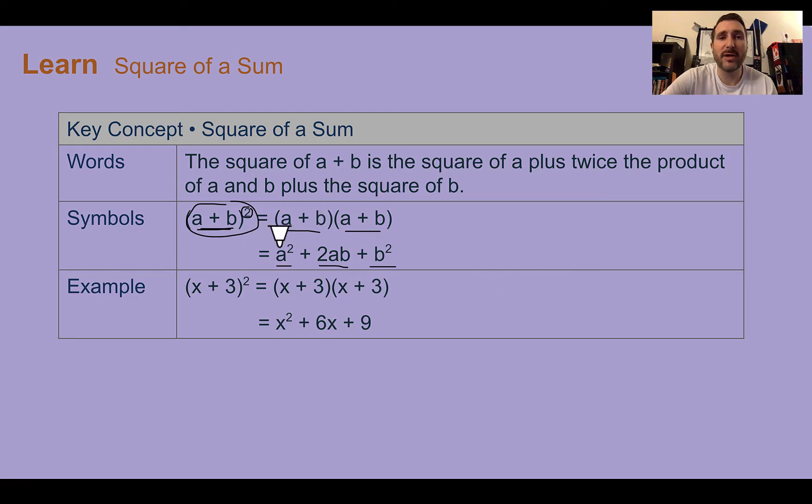So if you take a, multiply it by itself, you get this value. If you take b, multiply it by itself, you get the end value. And then if you multiply a times b and then times 2, you'll get the middle value.